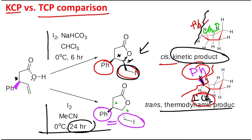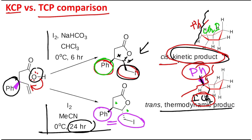Why is the KCP produced faster? In this case the CH₂I is above the ring, meaning the oxygen must attack from either the top or bottom face. From the top side there is a phenyl group, which as an aromatic ring has an electron cloud that causes repulsive interaction with the incoming oxygen lone pair. Attacking from the bottom side faces no such interaction, so it is easier. This gives the kinetic product where oxygen and phenyl are anti — the kinetically controlled product (KCP).